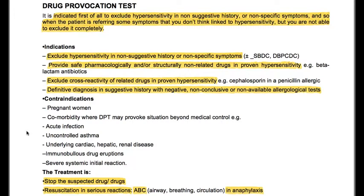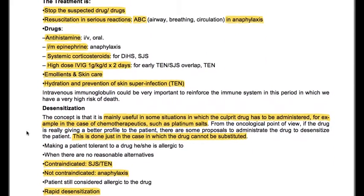Then immunobullous drug eruptions and severe systemic initial reactions. The treatment is: stop the suspected drug, resuscitation in serious reactions (airway, breathing, circulation) in anaphylaxis. Drugs that can be used include antihistamines (IV or oral), intramuscular epinephrine for anaphylaxis, systemic corticosteroids, high-dose IV immunoglobulin (1 gram per kilogram per day for 2 days) for TEN and Stevens-Johnson syndrome overlap, emollients and skin care, hydration and prevention of skin superinfection. Intravenous immunoglobulin can be very important to reinforce the immune system during this period of very high risk of death.